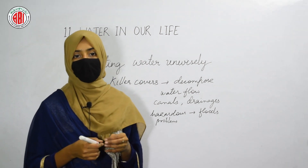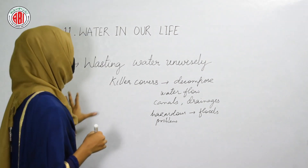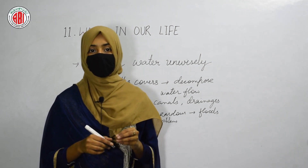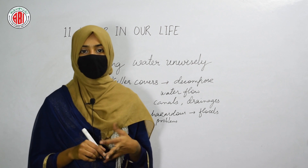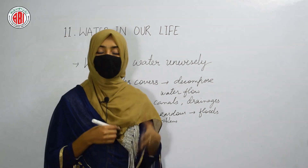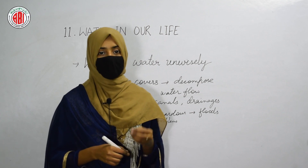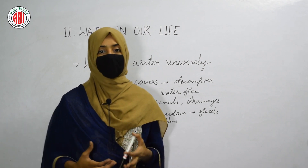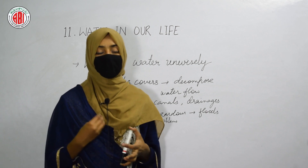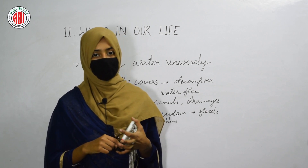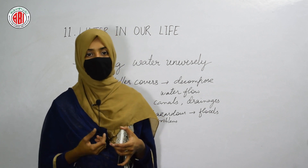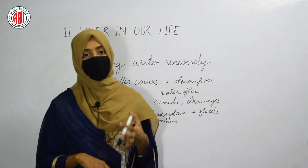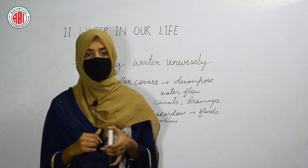In this way, we can prevent problems like droughts and floods. This lesson — Water in Our Life — has shown how water is important for our daily activities like washing clothes, cleaning utensils, and drinking. Without water, we cannot survive on Earth. We have also seen how much water is present on the surface of the Earth and how we can measure the volume of water using units like cubic centimeters, liters, milliliters, and feet.